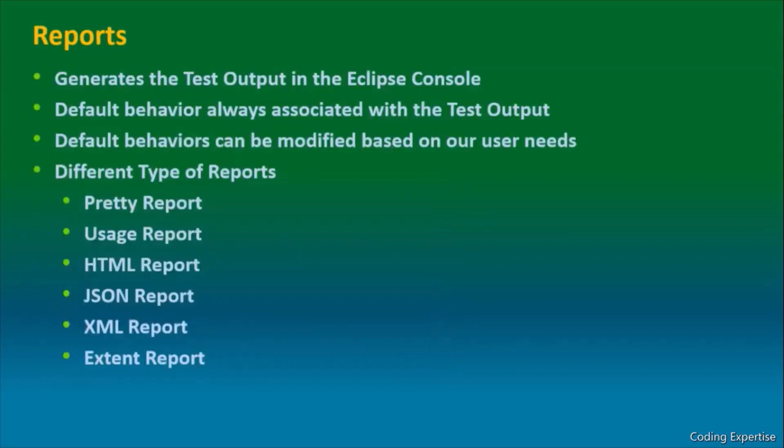Let's get into reports. Cucumber generates a test output in the Eclipse console. Default behavior can be overwritten based on the choice. You might think, what is default behavior? No need to worry. Different reports: HTML report, JSON report, XML report, extent report. This is the reason I would say the client is looking out for Cucumber automation framework development, so that they can generate different kinds of reports based on their choices.